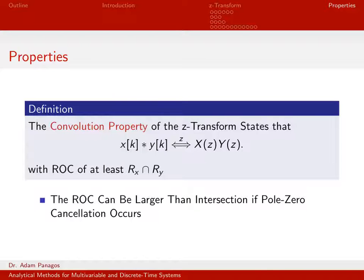We're going to look at the convolution property, the differentiation property, the initial value theorem, the final value theorem, and some other properties related to the z-transform.